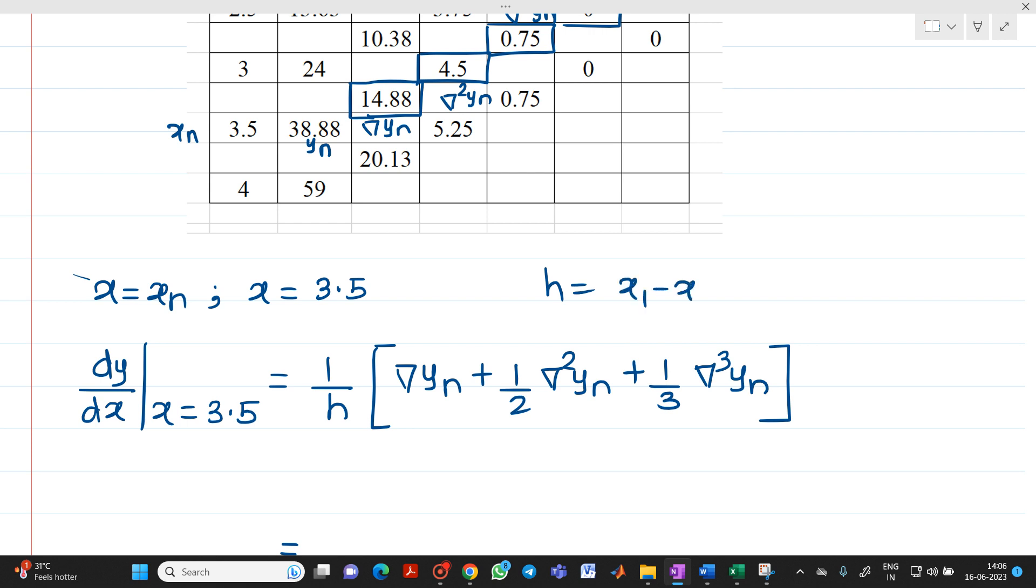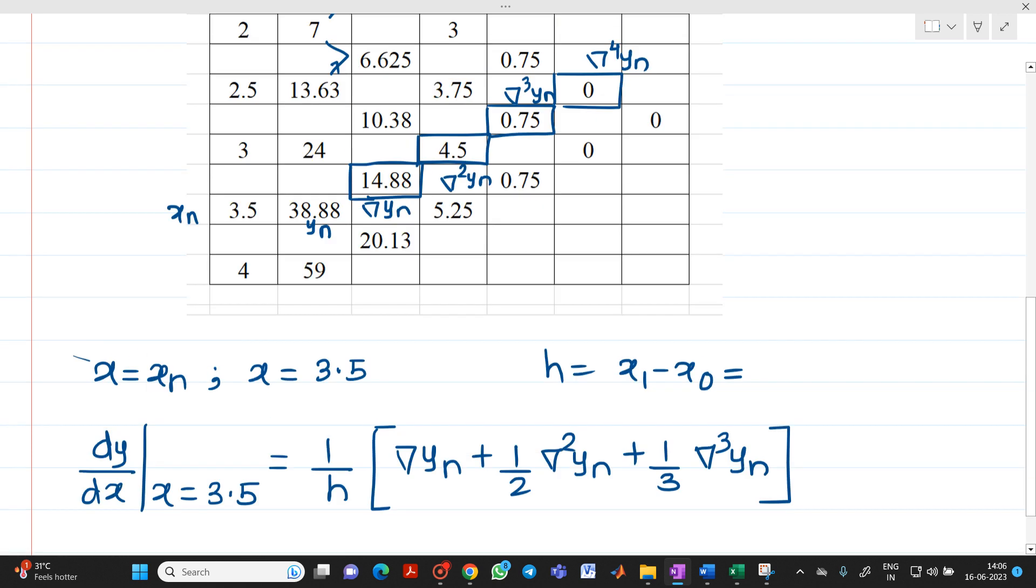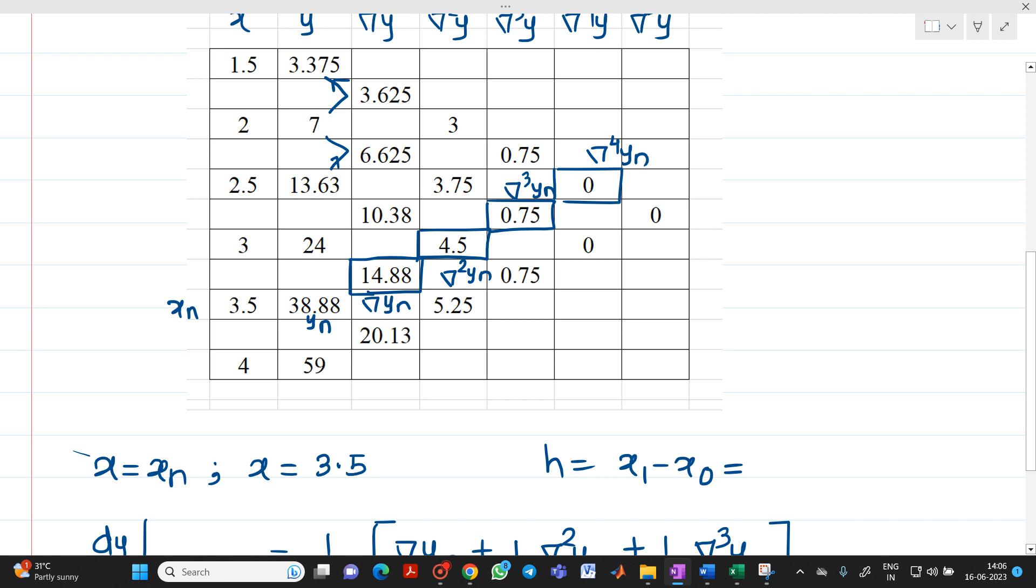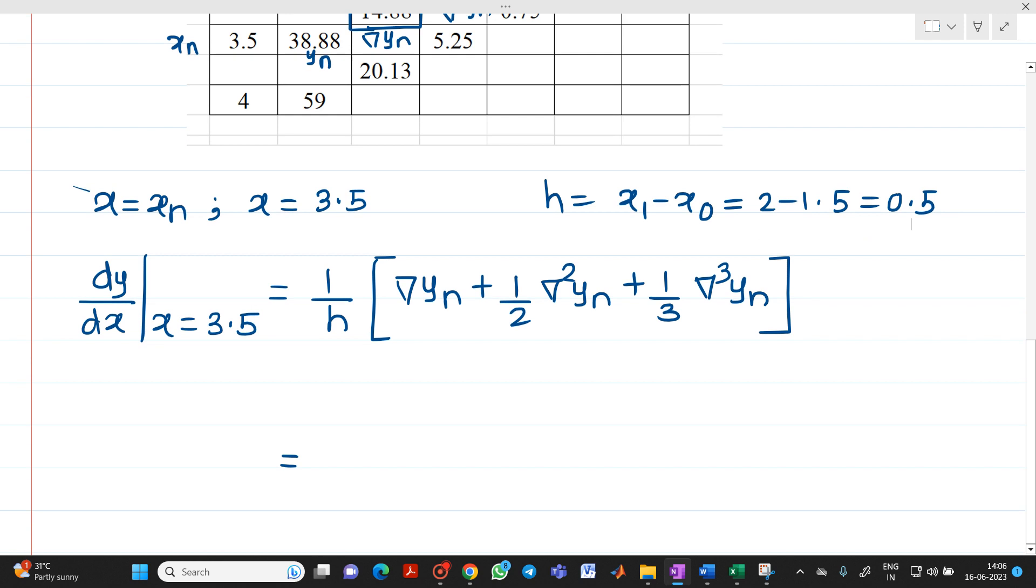h will be equal to x1 minus x0. So if you see, 2 minus 1.5, you will get answer as 0.5. So h will be 0.5. Let me substitute all the values. 1 divided by 0.5.